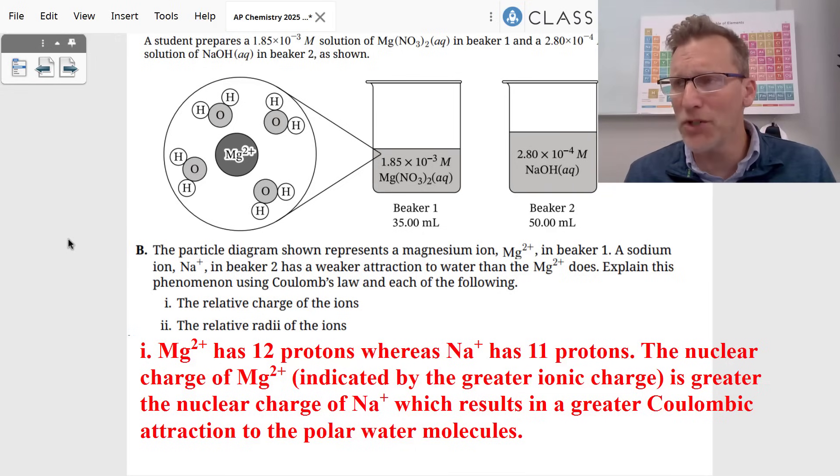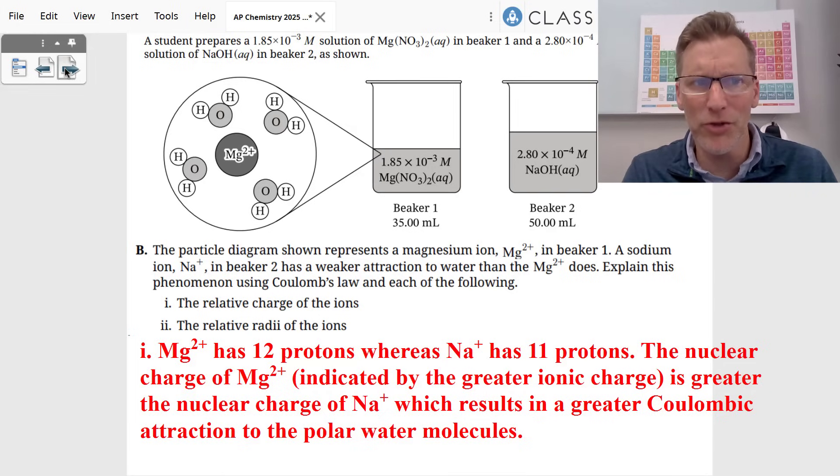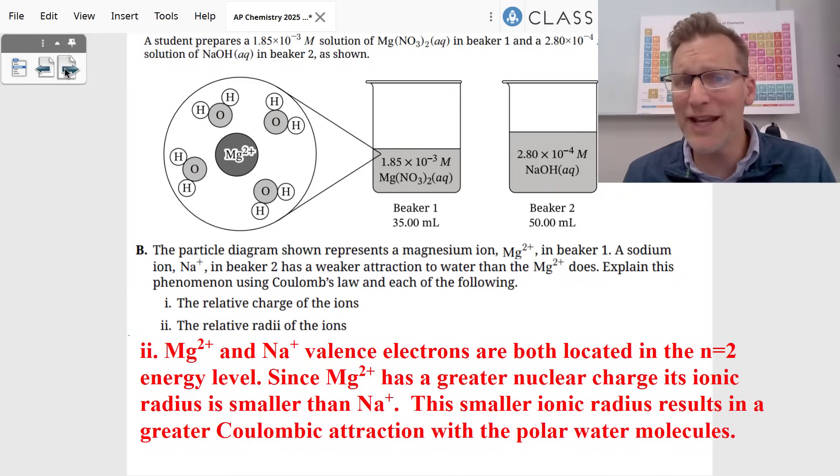And so since sodium plus one has a greater nuclear charge, has a greater positive charge, positive two, it results in greater Coulombic attractions to the polar water molecules. Question number two is asking about to look at this in terms of the relative radiuses of the ions. And magnesium plus two and sodium plus one, the valence electrons of both are located in the n equals two energy level, the principal quantum energy level.